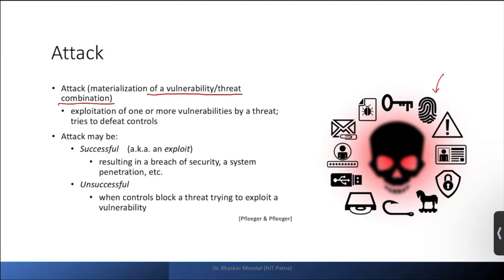Or if some notorious attacker can track what communication that person is doing — even installing malware on the router, changing the settings, and seeing what communication the original owner is doing through the internet connection. This is called materialization of vulnerability. Similarly, many times there was a vulnerability when an operating system was launched, attackers discovered it and carried out a real attack causing huge losses.